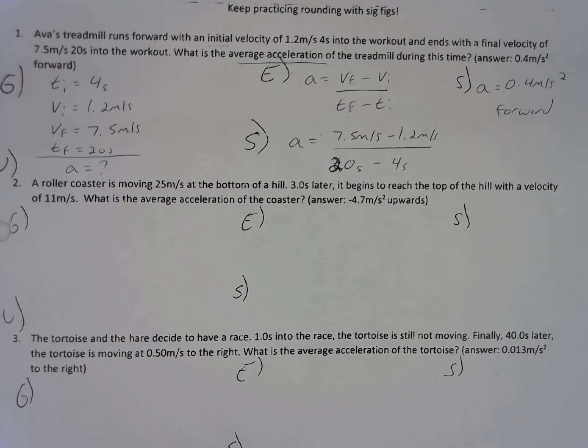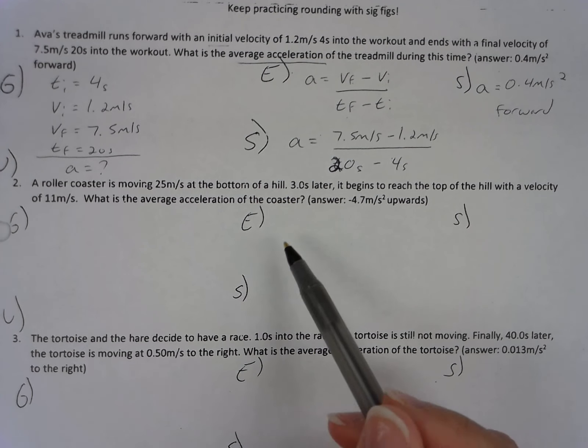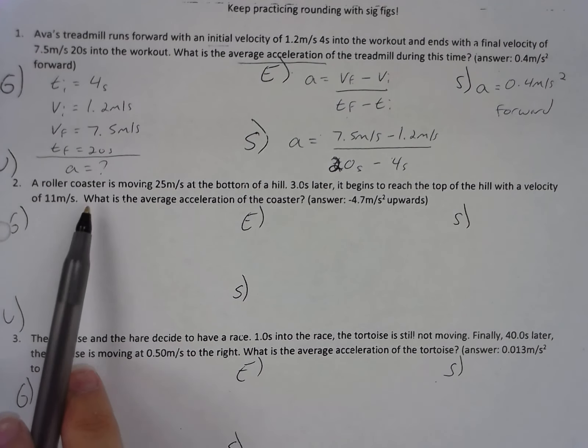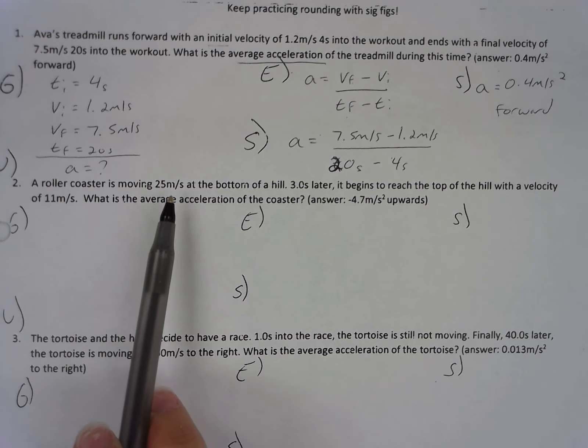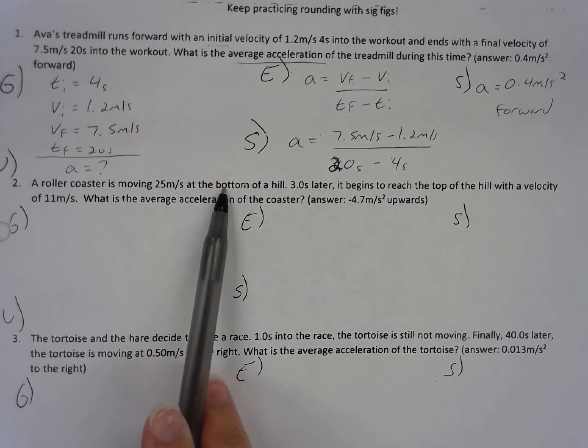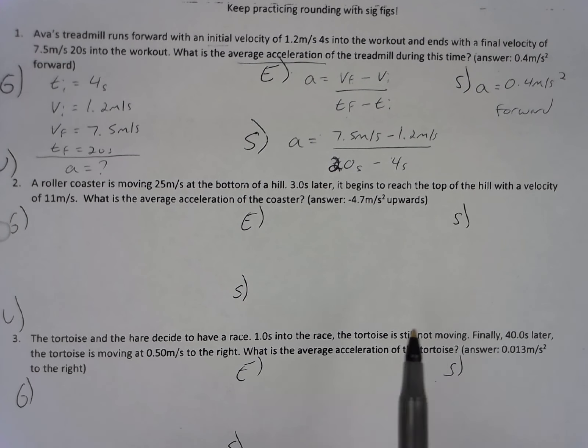A couple of things to point out on the worksheet or with the acceleration numbers for those of you that were absent. So here, I'm moving on to this roller coaster problem. Roller coaster moves at 25 meters per second at the bottom of a hill. Three seconds later, it's at the top with a velocity of 11 meters per second. So I have two velocity numbers here, but only one time number.